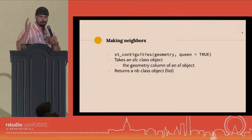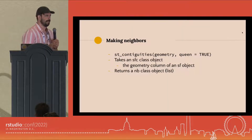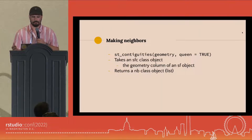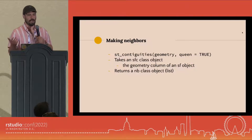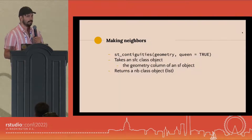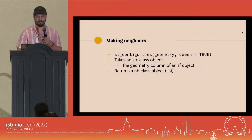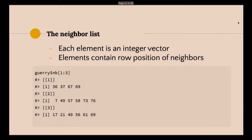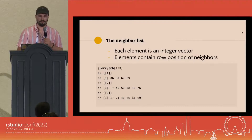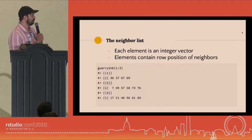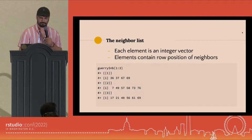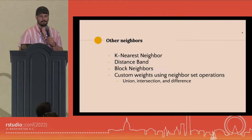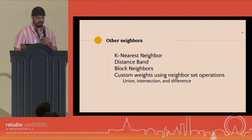Fundamentally, with exploratory spatial data analysis we need to understand our neighbors. To do that, we use the st_contiguity function, which takes an sfc class object, or the geometry column of an sf object, and returns a list for identifying your neighbors. The result is a list where each element is an integer vector, and the elements contain row positions of its neighbors. We're not just limited to contiguity for polygons — we can also implement k-nearest neighbors, distance bands, and so on.